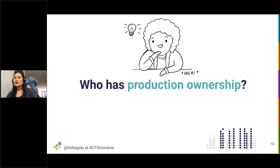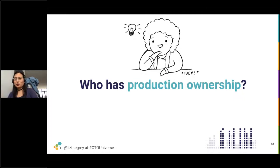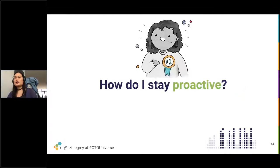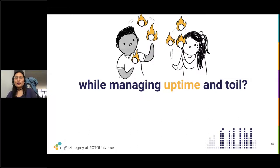A lot of these questions boil down to the issue of who has production ownership — who is accountable for making sure that production runs smoothly. Sometimes you hear that product development software engineers should be responsible for production. Other times, people say your site reliability engineering team should be staffed to have production ownership. In this talk, we're going to go into detail about how you actually foster production ownership and, in fact, production excellence among whichever team members are most appropriate for your organization.